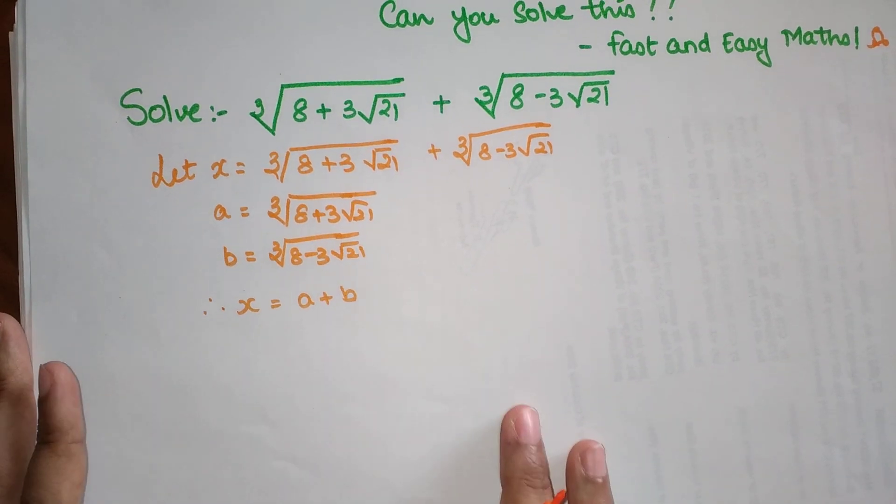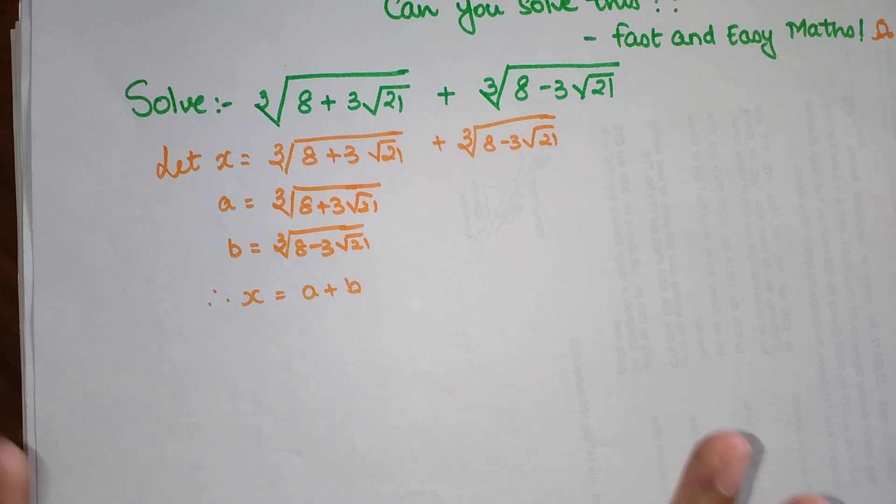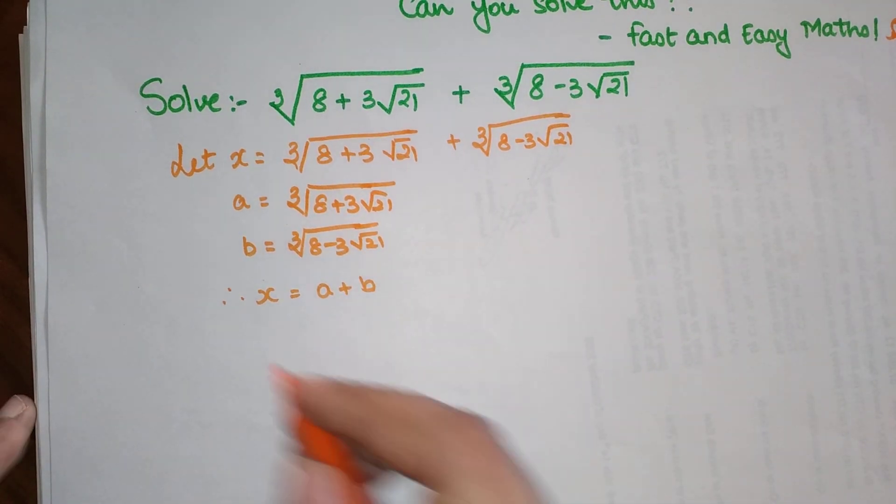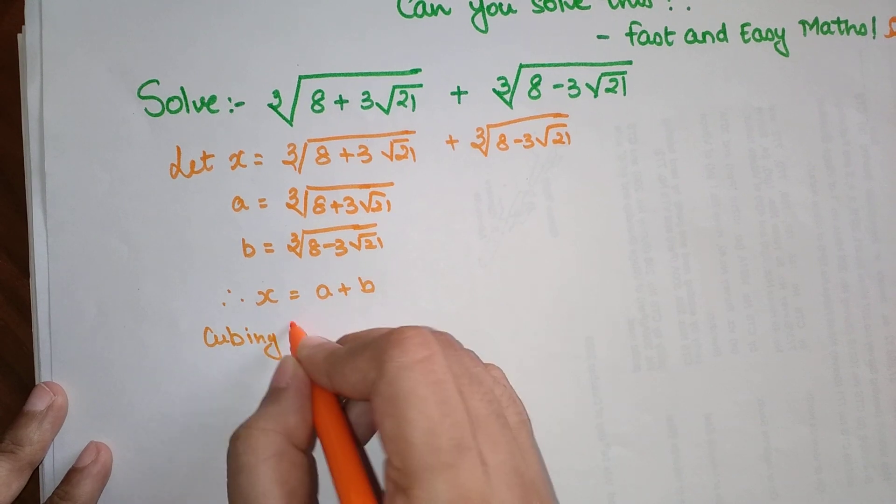Now I can say that therefore x equals a plus b. The major problem is that both of these terms are coming under a cube root and I don't like cube roots, so I'm just going to remove them by cubing both sides.